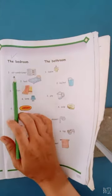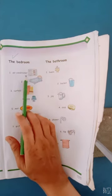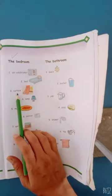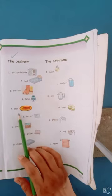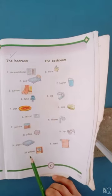In the first column, we will revise bedroom things: air conditioner, bed, curtain, lamp, mat, mirror, picture, pillow, sheet, window.